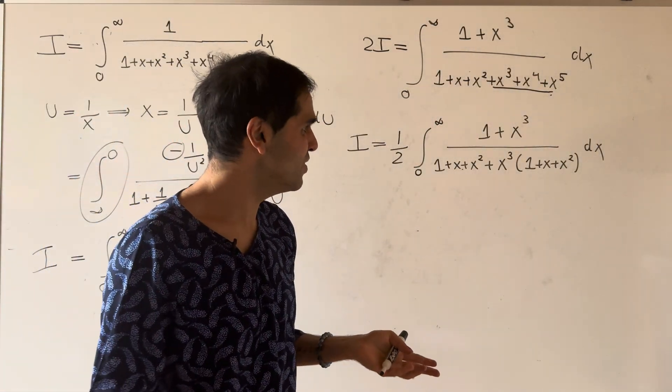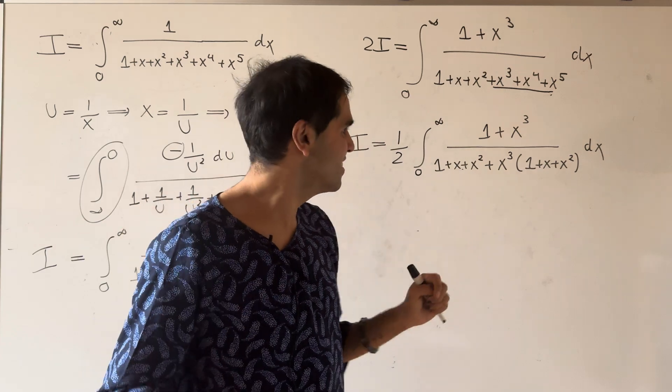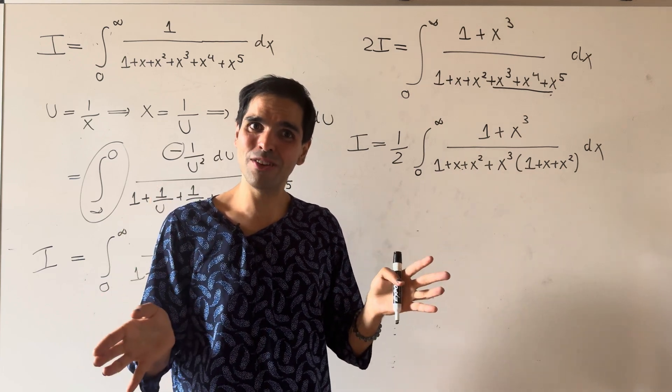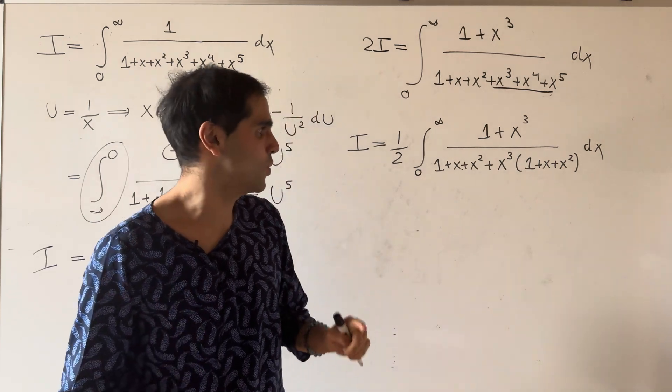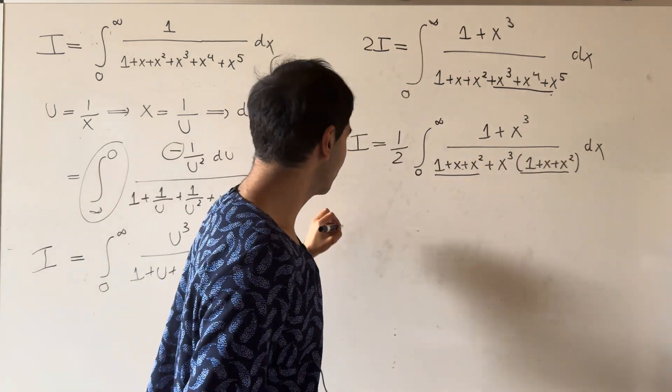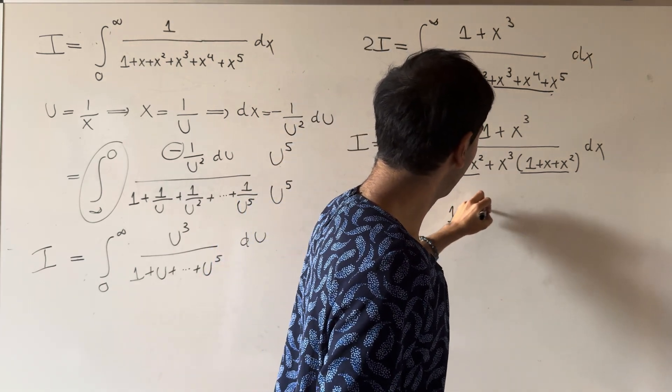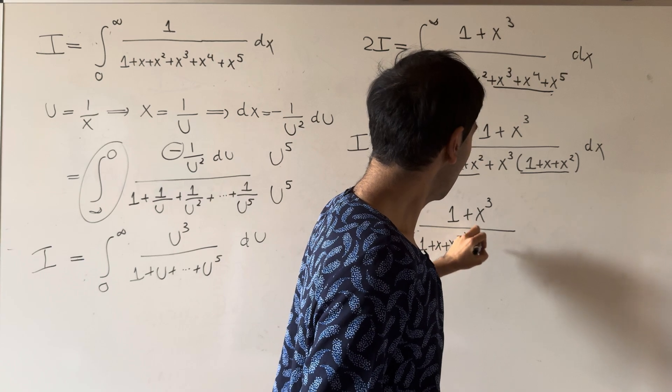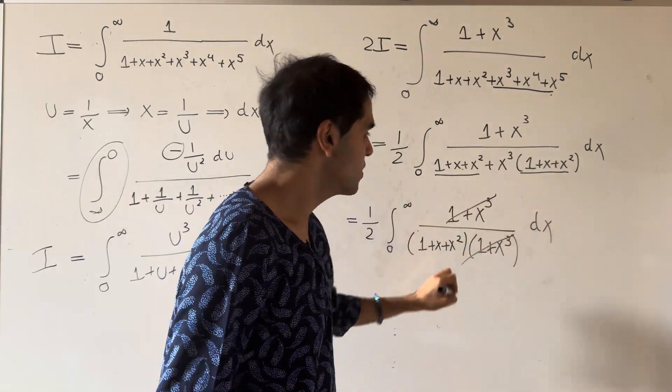Now, this is something I sometimes tell my students. This is not too good to be true; this is in fact good and true, because what happens here is that this part factors out. You get 1 half integral from 0 to infinity of 1 plus x cubed over 1 plus x plus x squared times 1 plus x cubed dx. And now this nasty part just factors out.